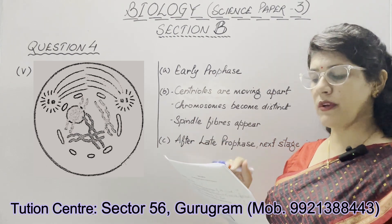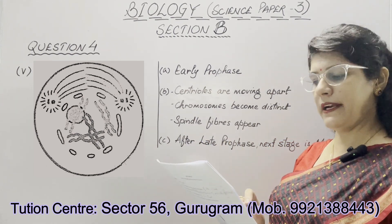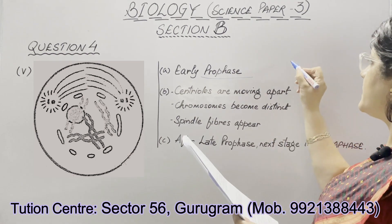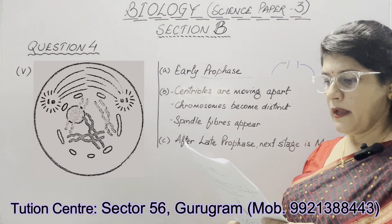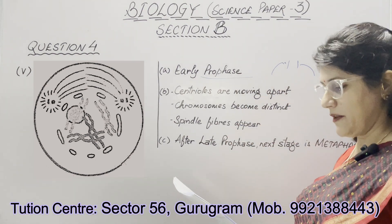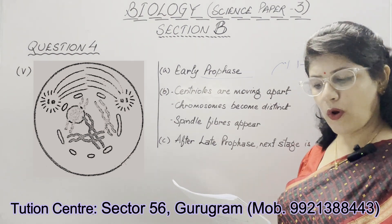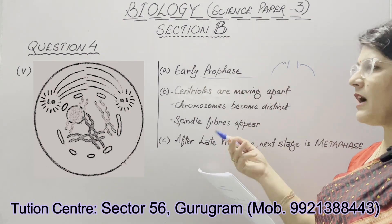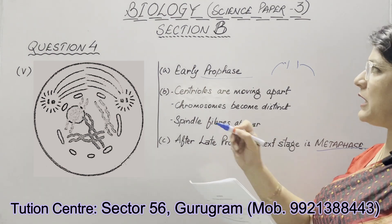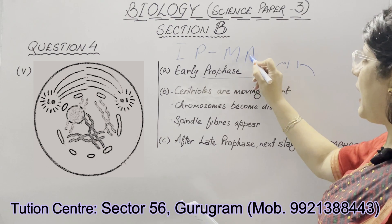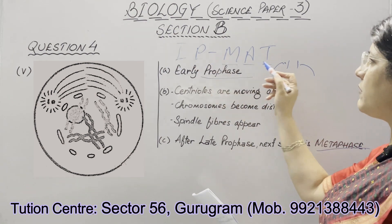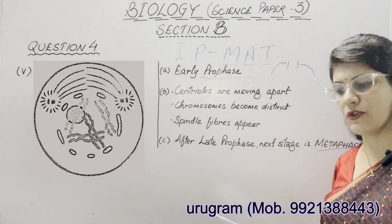In the last part of question number 4, a diagram is given representing a stage during mitotic cell division. The stage is early prophase, because you can see centrioles are moving apart, chromosomes become visible and distinct, and spindle fibers appear between the two daughter centrioles. The next stage that follows is metaphase. You can remember these phases with the keyword IP MATCH: Interphase, Prophase, Metaphase, Anaphase, and Telophase — the keyword to remember the sequence of mitotic division phases.